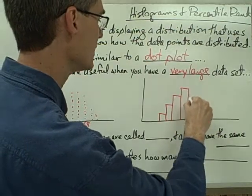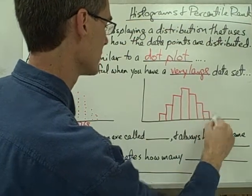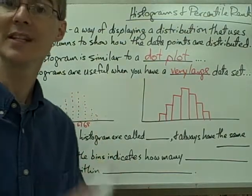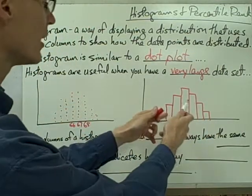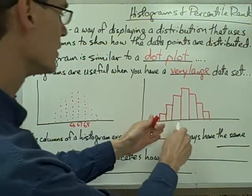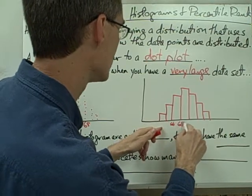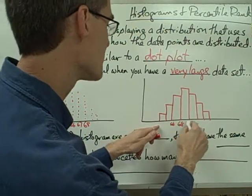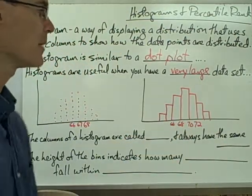You can see it has these columns instead of dots. So basically, instead of showing every single data point in the data set, we're going to use these columns to show just the number of data points in a particular range. For example, our range might be people who had heights from 66 to 68 — those are the people in this column right here, called a bin. From 68 to 70 would be this bin, and from 70 to 72 would be this bin. That's our histogram.